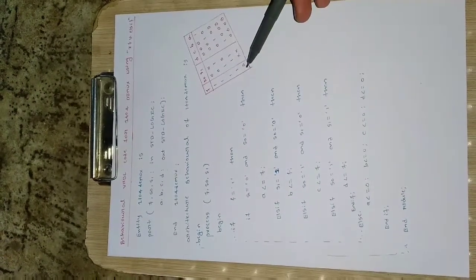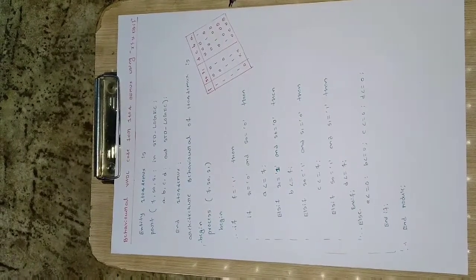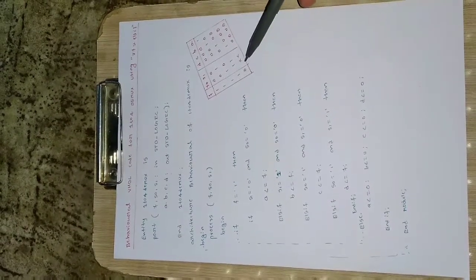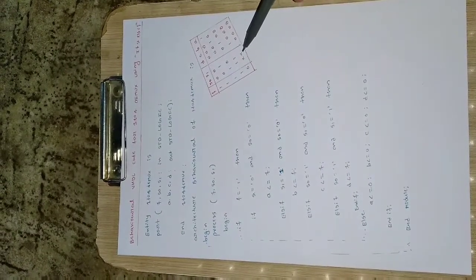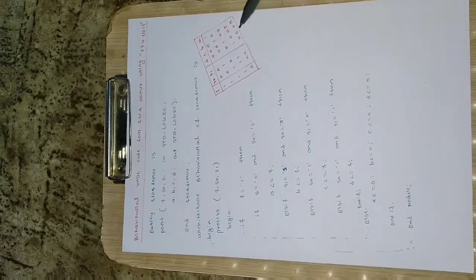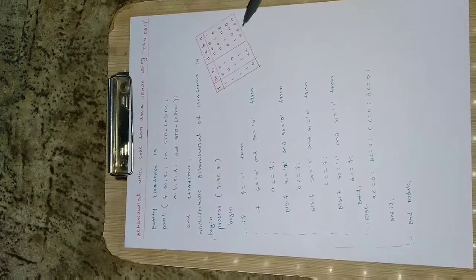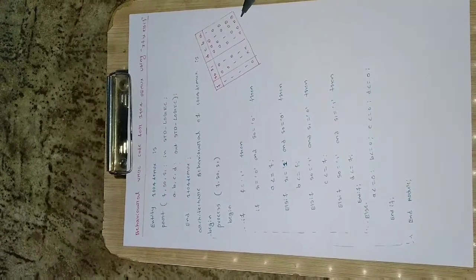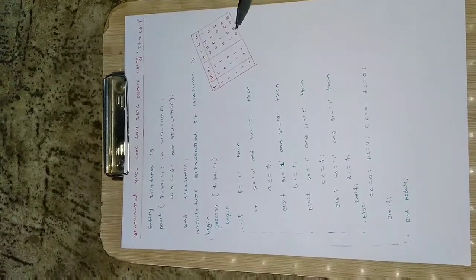What happens if the input to the DMUX is 0? We know that if the input is 0 for any circuit, the output should be 0. The same applies here — when the input F is 0, it will not care about the select line; that is a don't care condition. It will directly give all outputs as 0. This is how a simple 1-to-4 DMUX works. Now we will see how to write the code using this truth table.